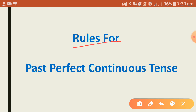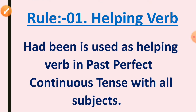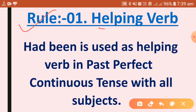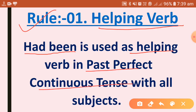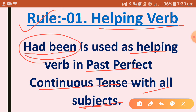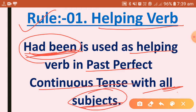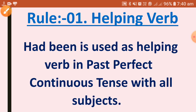Now we will see some rules for past perfect continuous tense, one by one. Number one: rules for helping verb. Here, 'had been' is used as a helping verb in past perfect continuous tense with all subjects — meaning with both singular and plural subjects, only 'had been' will be used.